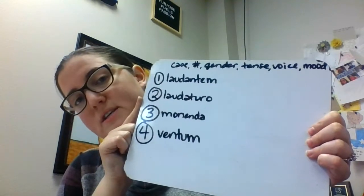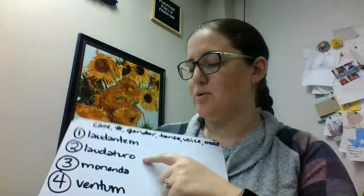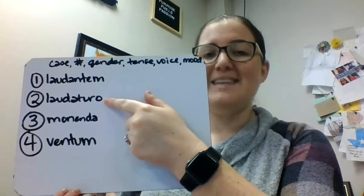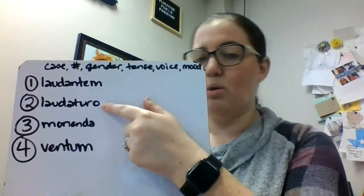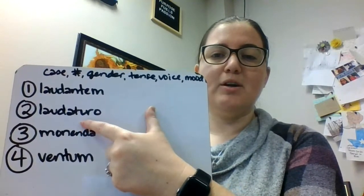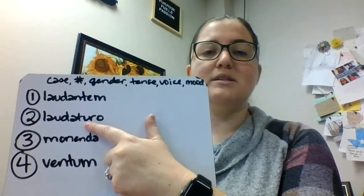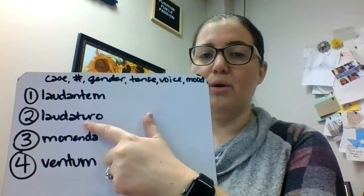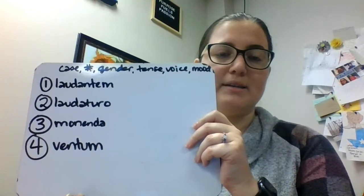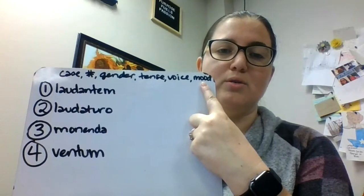Hopefully you did those. Now I'm going to explain these. First we have laudaturo. I'm looking at that 'o' ending, which can be dative or ablative, singular, masculine or neuter. Let's go dative, singular, masculine. Then I'm looking at that 'ur' here — that 'ur' tells us future. Remember, that's our 'sherbeturus' participle. So that would be dative, singular, masculine, future active participle. And participle is your mood.